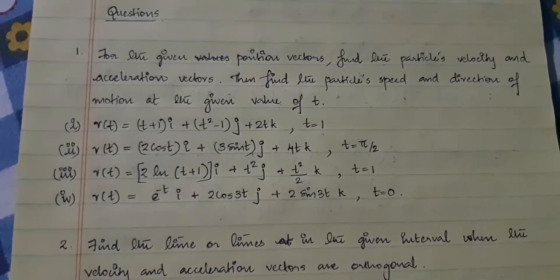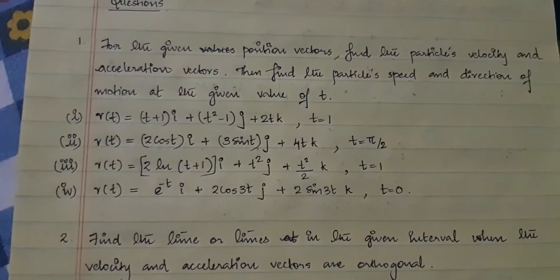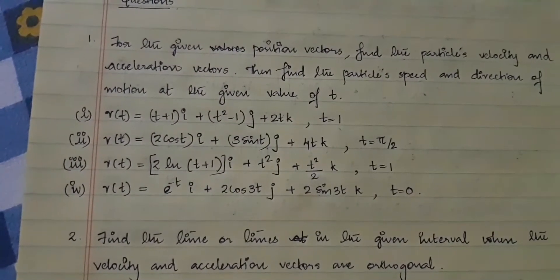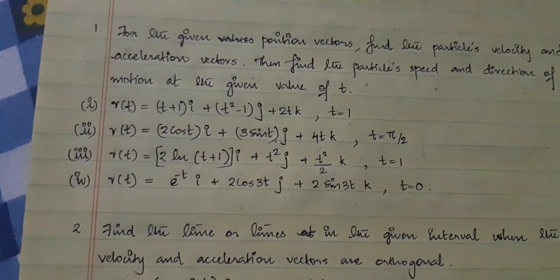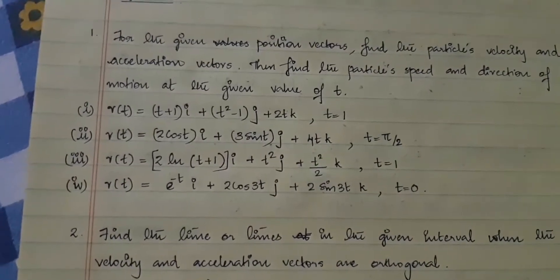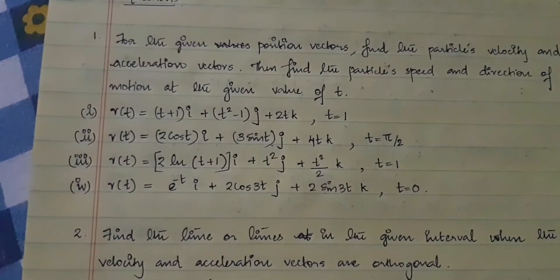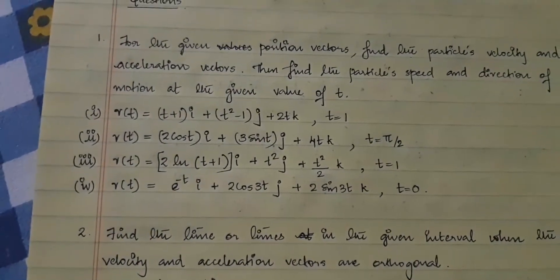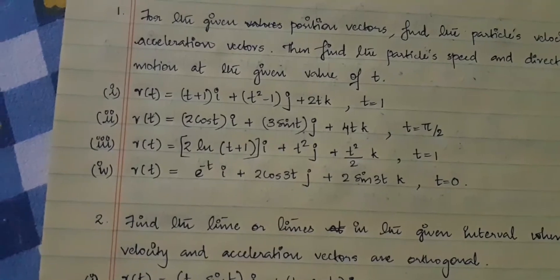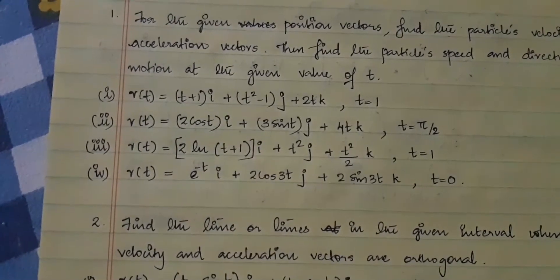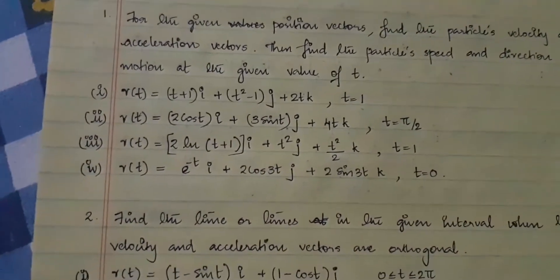The first section of questions asks you to find the particle's velocity and acceleration vectors, the particle speed and direction at a particular value of t given for each question. All you have to do is apply the formulas: for velocity, find the derivative of the position function; for acceleration, find the derivative of the velocity function; for speed, find the magnitude of the velocity vector; and for direction, find v divided by magnitude of v.